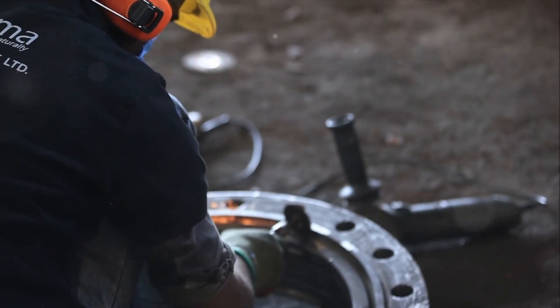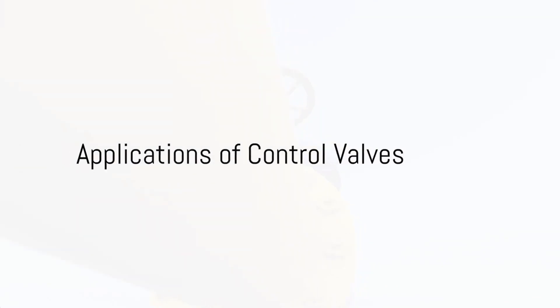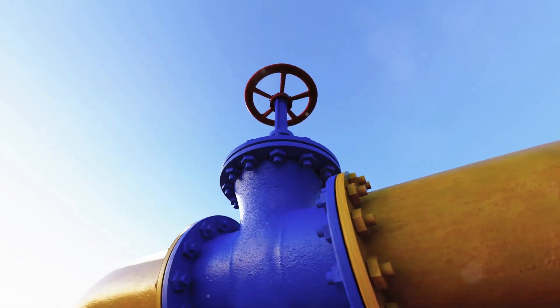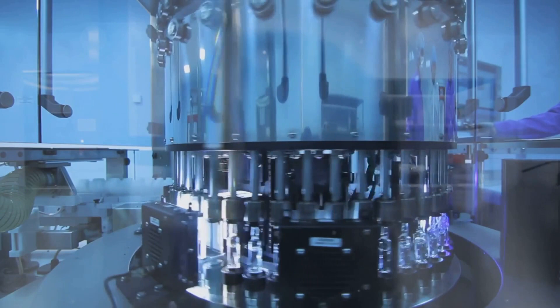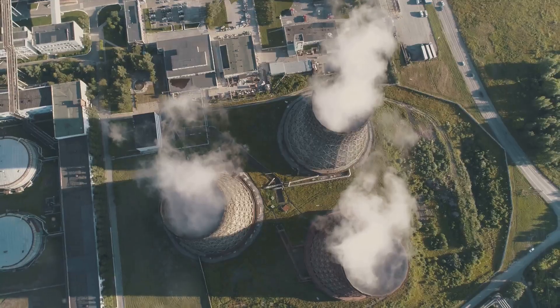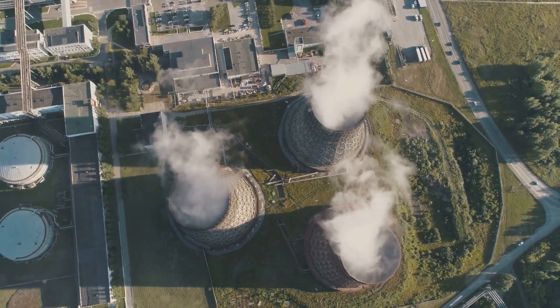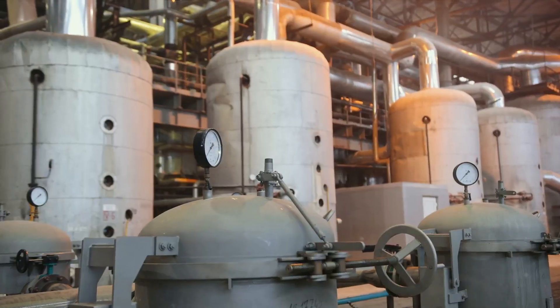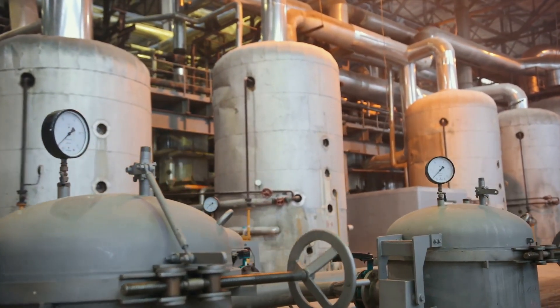What are some common applications of control valves in different industries? Control valves, with their ability to regulate the flow of fluids, are integral to many industries. In the oil and gas sector, control valves are used extensively — they manage the flow of oil and gas through pipelines, regulate pressure in storage tanks, and control temperature during refining processes. They also play a crucial role in safety systems, helping to prevent over-pressure situations that could lead to catastrophic events. In chemical processing, control valves help maintain precise process conditions such as temperature, pressure, and flow rate, which are critical for producing consistent, high-quality products.